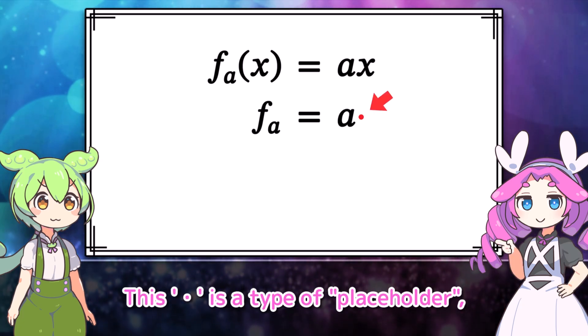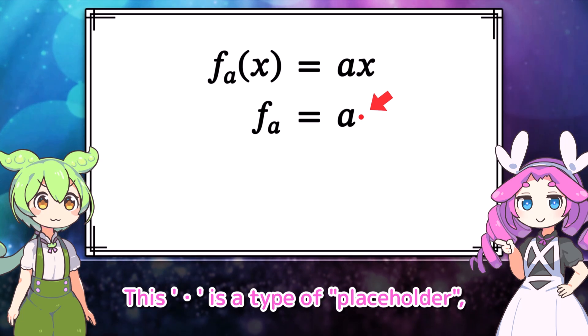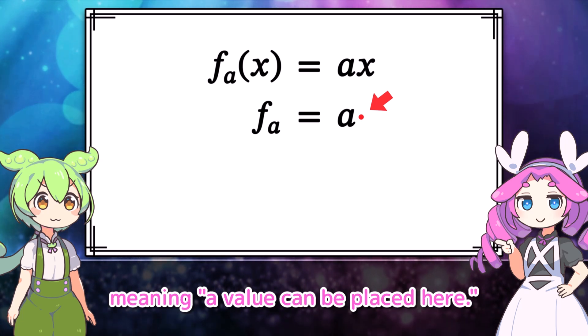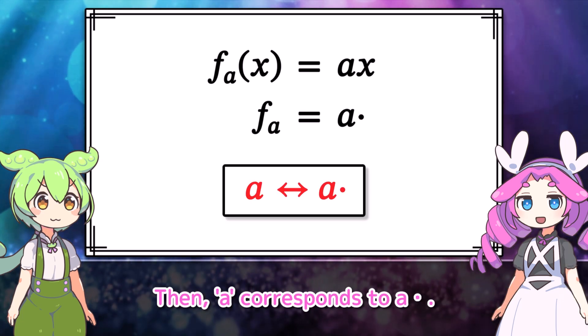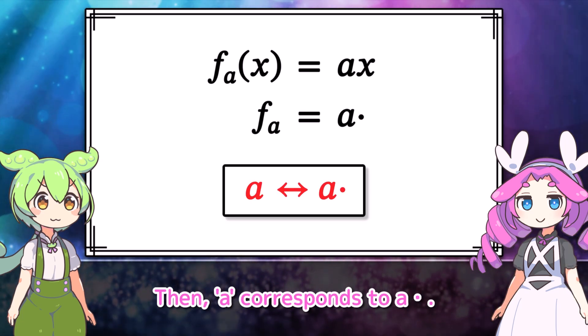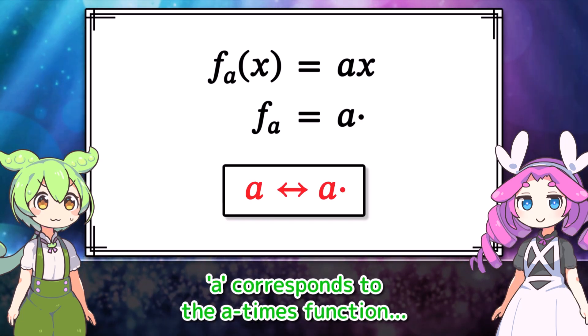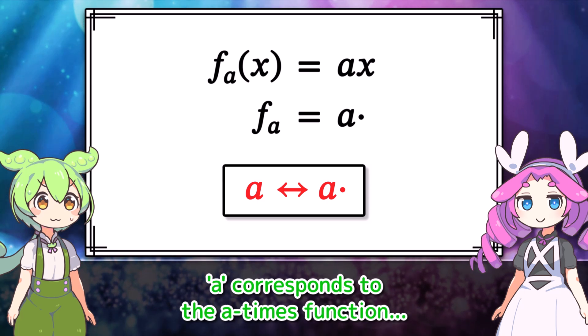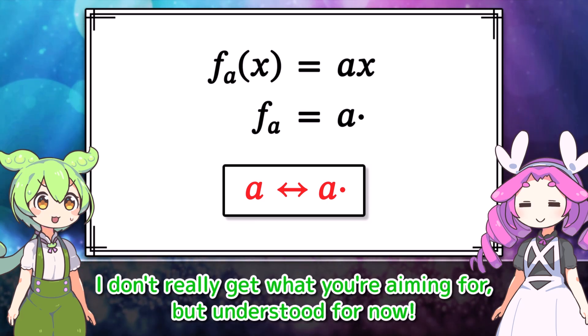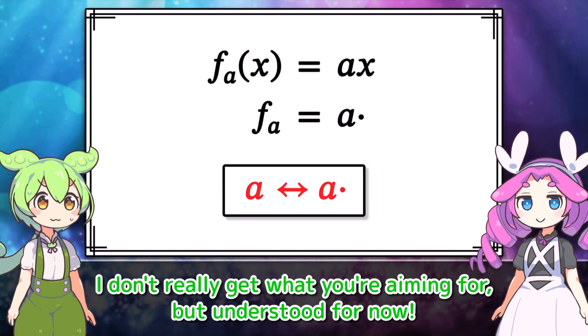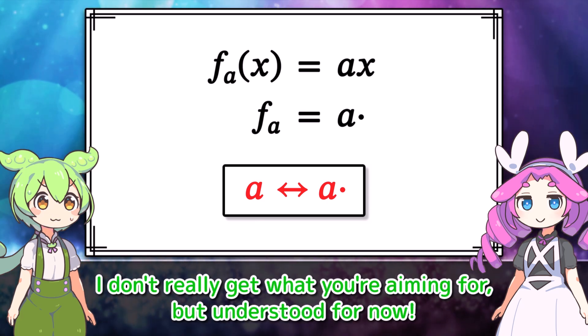This dot is a type of placeholder, meaning a value can be placed here. Then a corresponds to a dot — a corresponds to the a times function. I don't really get what you're aiming for, but understood for now.